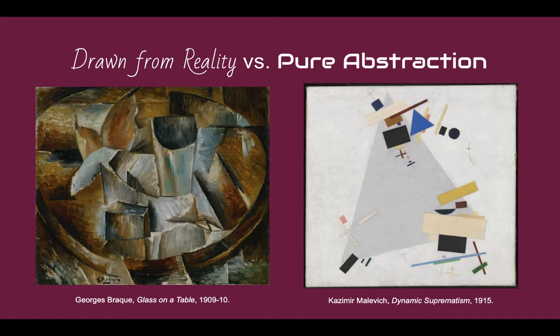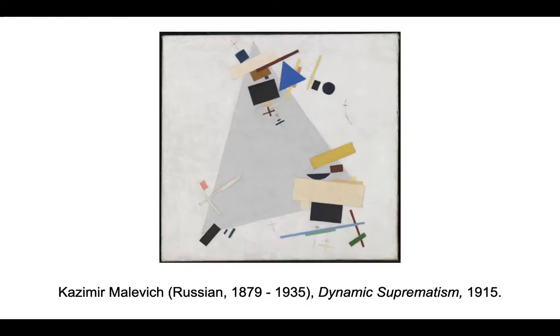There are two major camps within the world of abstract art. Often people are thinking about non-objective art — art that comes directly from the artist's imagination — when they think about abstract art. But there's another approach to abstraction that is equally valid. When you distill the essence of a form that exists in nature, you are also making an abstract work. Let's see some examples of non-objective art.